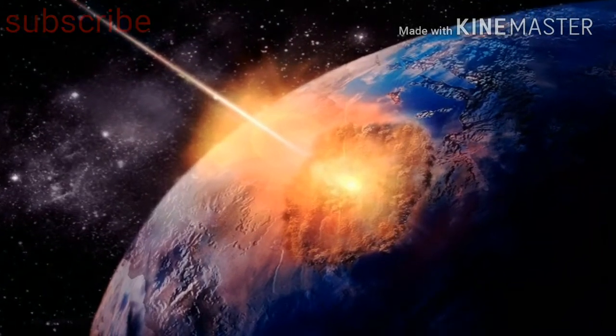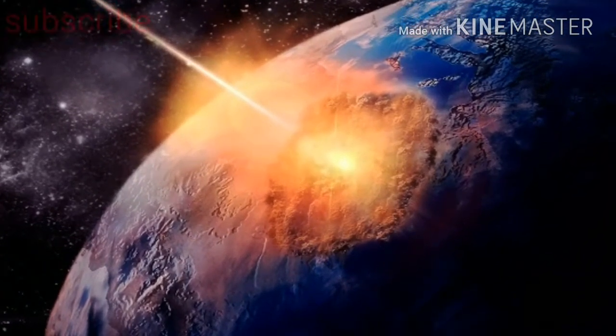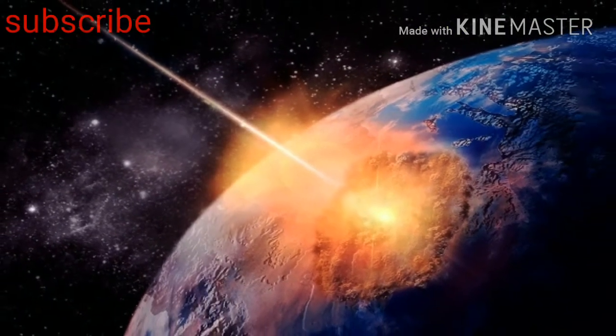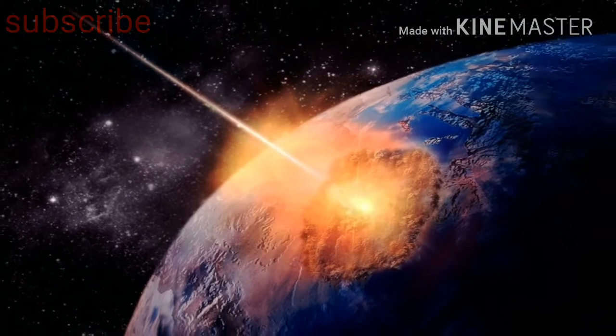A giant three-mile wide asteroid is racing towards the Earth at a lightning speed of 45,000 miles per hour. American space agency NASA is still clueless about the proximity of the asteroid.